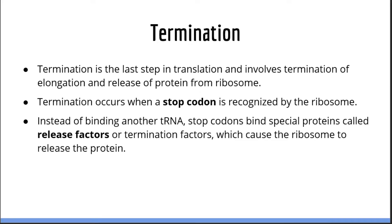Now let's talk about termination, the last step in translation. Termination involves the termination of elongation and release of the new protein from the ribosome. It occurs when a stop codon is recognized by the ribosome. When this occurs, special proteins called release factors or termination factors bind the ribosome and cause the ribosome-mRNA complex to collapse, and the newly made protein is released.